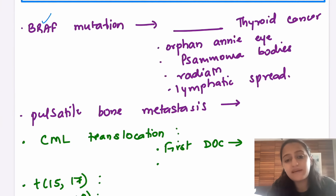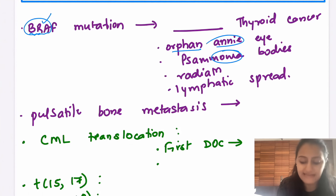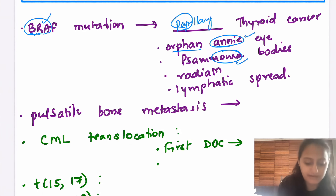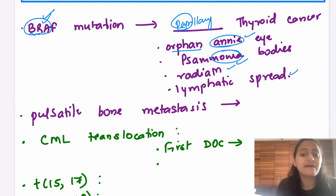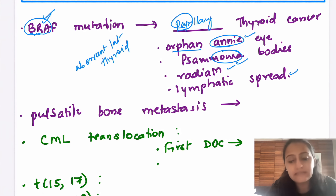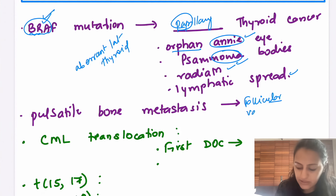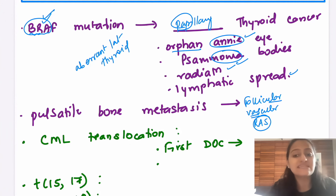For thyroid cancer, BRAF mutation — remember the mnemonic: BRAF is 'bro,' psammoma bodies are 'mama,' orphan Annie nuclei, and 'papa' is papillary thyroid cancer. Radiation-induced thyroid cancer is papillary and shows lymphatic spread with enlarged lymph nodes called aberrant lateral thyroid. Pulsatile bone metastasis is seen with follicular thyroid carcinoma, which shows vascular spread, and you see RAS mutation in follicular.